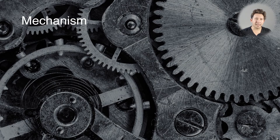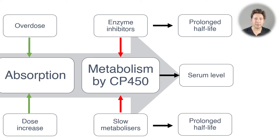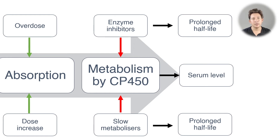So what's the mechanism of phenytoin toxicity? There are two main things that could happen. One is increased absorption of the drug, either because you've had a dose increase or you've taken an acute overdose. The other is decreased metabolism, either through inhibition of cytochrome P450 enzymes or because you are a genetically slow metabolizer to begin with. Any of these things will result in an increased serum concentration.